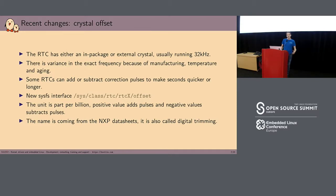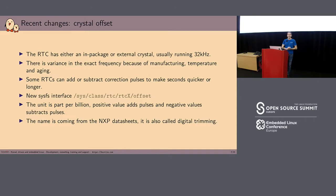An RTC doesn't just give the time — you still want that time to be precise enough. You have a crystal, either external or in-package, usually running at 32 kHz. Because of manufacturing processes, temperature, or aging of the quartz, you will find variations in the exact frequency. So you want to be able to tune that frequency. Some RTCs provide registers to control correction pulses — they add or subtract pulses from time to time within a second, making that second slightly longer or shorter. We now have a sysfs interface for that.